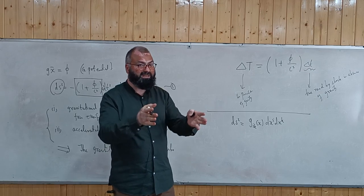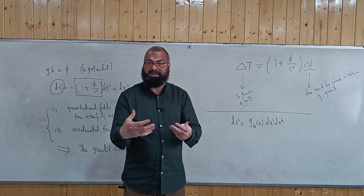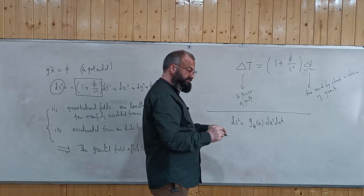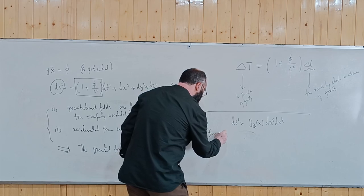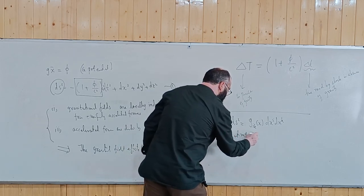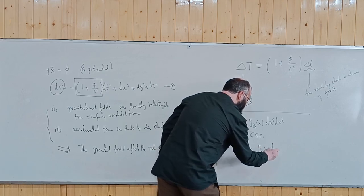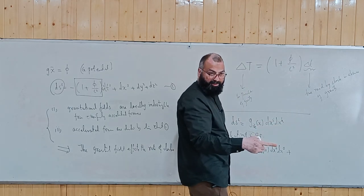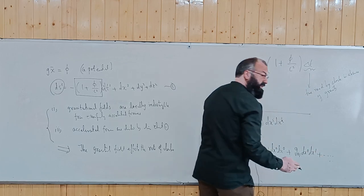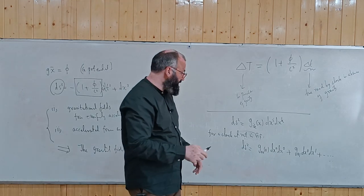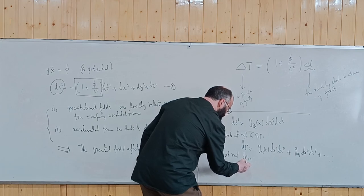For a clock at rest in the gravitational field, the spatial differentials dx^1, dx^2, dx^3 are zero. That means ds² = g_00(x) c² (dx^0)². All the other terms vanish because they contain differentials of the spatial coordinates. Only the differential of time dx^0 = c dt remains. So the line element for a clock at rest contains only the time component.